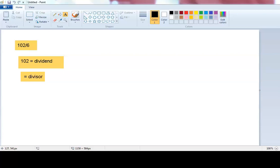So let's draw the division bracket. That means we're going to put 102 inside the bracket because it is the dividend, and then the divisor outside the bracket.